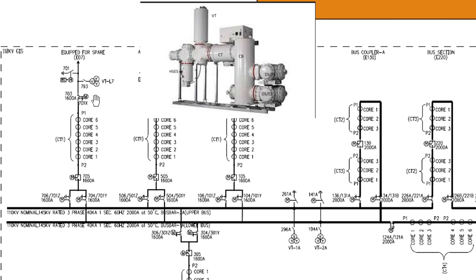From P1 to P2 are the CTs — current transformers. In the same way as the VT, the CT is also a step-down instrument transformer, but for current. It steps down the current to a measurable range. For example, the circuit breaker is designed for 1600 amperes; if the current flowing is 1000 or 700 amperes, no one can directly measure this, but the CT will step it down to a measurable value.